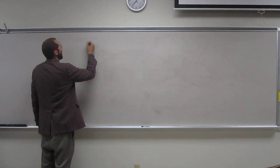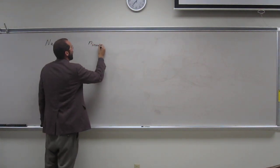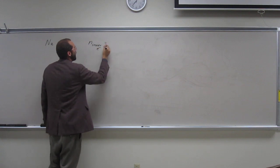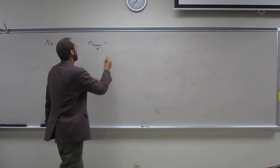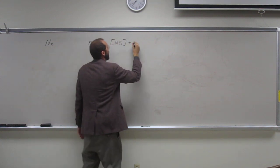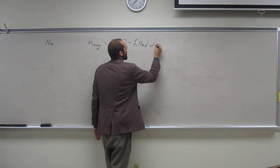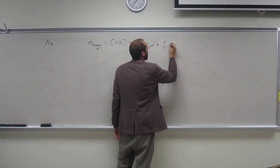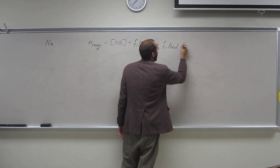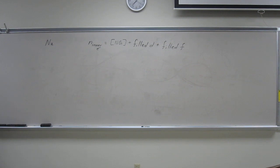The number of inner electrons is going to equal the noble gas previous plus the filled D's plus the filled F's. In order to do this, probably the best thing to do is write the electron configuration, or at least the condensed electron configuration.